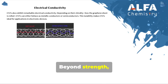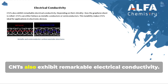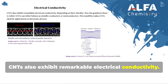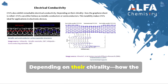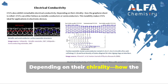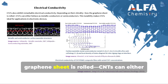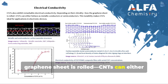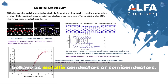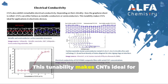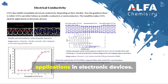Beyond strength, CNTs also exhibit remarkable electrical conductivity. Depending on their chirality — how the graphene sheet is rolled — CNTs can either behave as metallic conductors or semiconductors. This tunability makes CNTs ideal for applications in electronic devices.